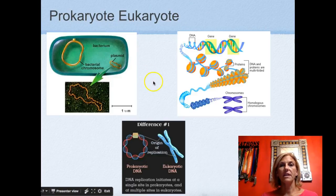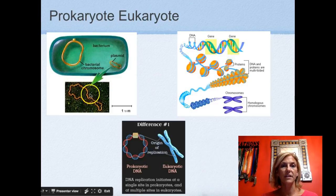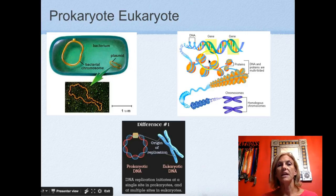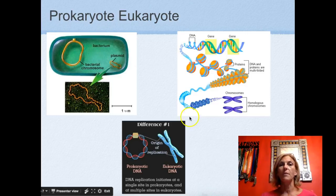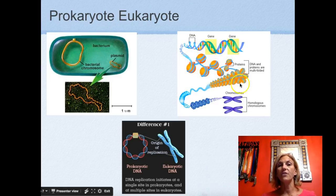Here are the two sets of DNA. The prokaryote has circular single-stranded DNA and may have extra plasmids with special features. Our DNA is typically thought of in the form of a chromosome — before forming a chromosome we have a double-stranded helix, and that strand gets wrapped around proteins called histones. The histones are further coiled up until they form chromosomes.